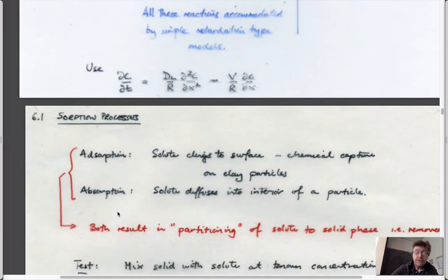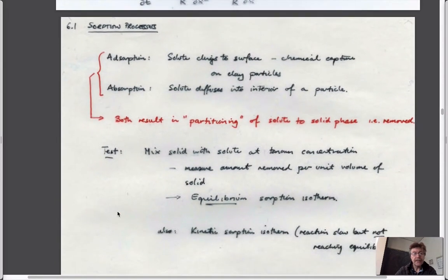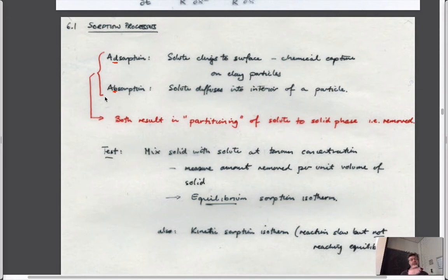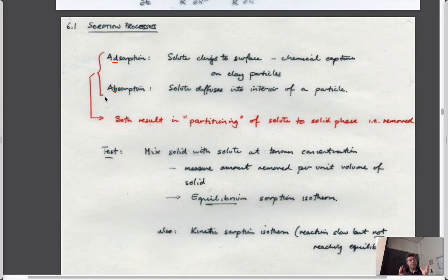Sorption comes in two flavors: adsorption and absorption — with a D and a B. There are subtle differences, somewhat like the difference between molecular diffusion and mechanical mixing. Both physically look like a diffusive process but are completely different. Adsorption involves flow paths that diverge downstream, giving a bell-curve concentration distribution. Absorption is Brownian motion spreading the ink drop to reduce concentration gradients. Both end up looking like the same bell curve but spread for very different reasons.